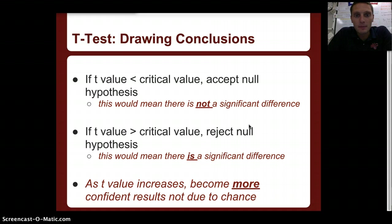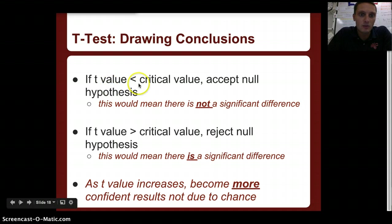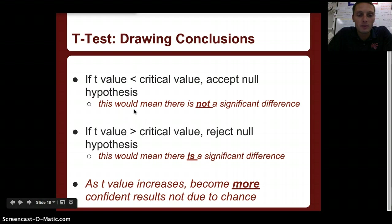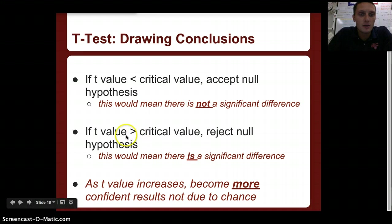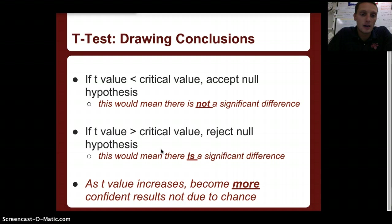To wrap up drawing conclusions: if the t-value is less than our critical value, we accept the null hypothesis, meaning there is not a significant difference between the two samples. If our t-value is greater than the critical value, we reject the null hypothesis, meaning there is a significant difference between the two samples. As the t-value increases, we become more confident in our results due to there being less chance.